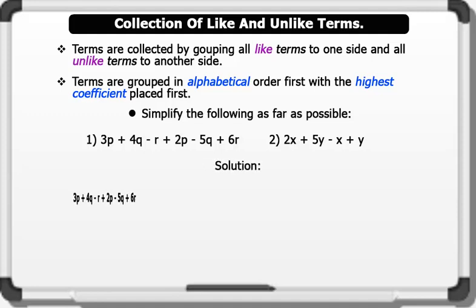One: 3P plus 4Q minus R plus 2P minus 5Q plus 6R. Now let's group the terms first by alphabets, then by numbers. We have 3P plus 2P minus 5Q plus 4Q plus 6R minus R. Now we simplify.